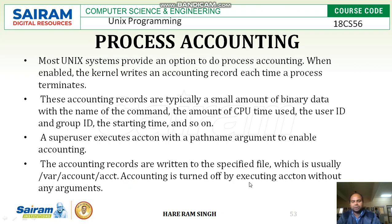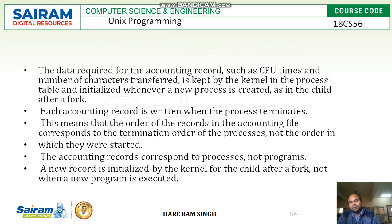Accounting is turned off by executing acct without any argument. Once process accounting is done, you can turn it off using the acct command. Data required for the accounting record such as CPU time and number of characters transferred is kept by the kernel in the process table and initialized whenever a new process is created, as in the child after a fork.